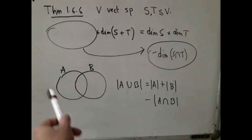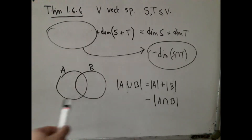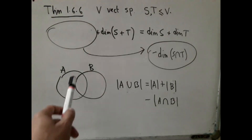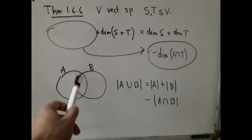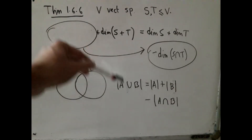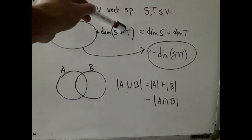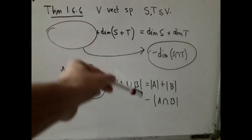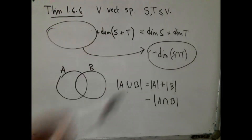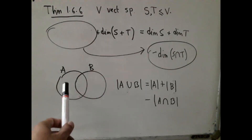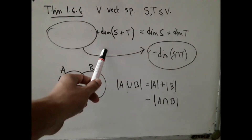...the size of the union is given by size of A plus size of B minus the size of the intersection. Here the role of union is played by the sum, and the role of size is played by dimension. So if we know how to prove the inclusion-exclusion result, we have hope of being able to prove this dimension result.